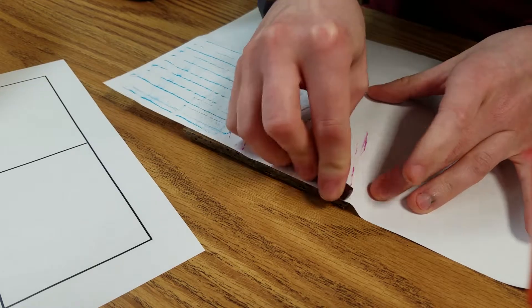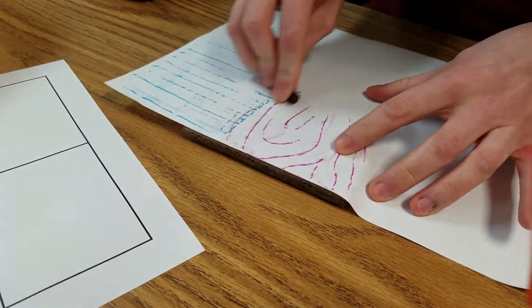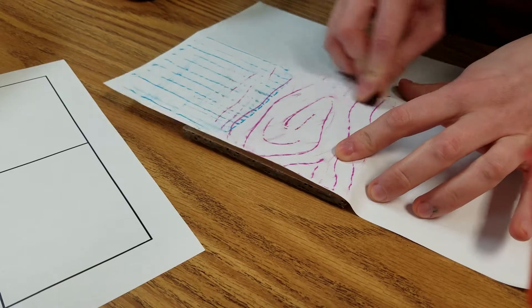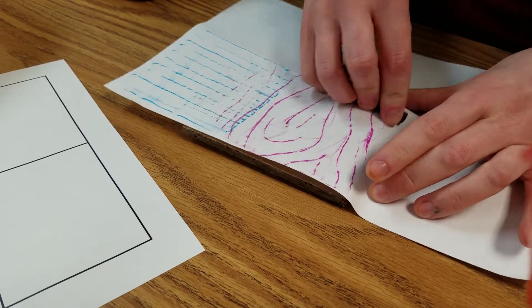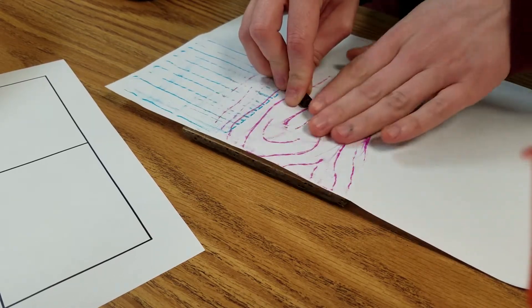So then you just take your crayon and you rub over the texture with the crayon like this on your paper. Now you kind of have to push down a little bit when you do this, and you've got to hold your paper down too or it's going to just go every which way.